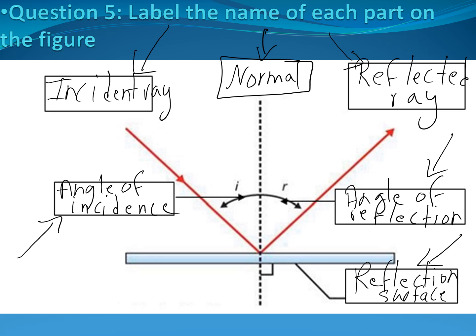Maryam, what can you say about the angle of incidence and the angle of reflection? They are equal. The angle of incidence is equal to the angle of reflection. This phenomenon is called the reflection of light. The surface can be called a reflection surface or a mirror — both are acceptable.